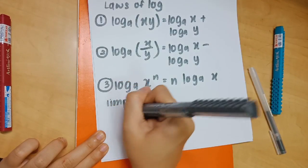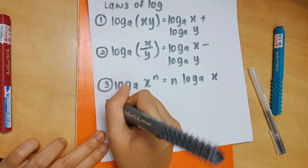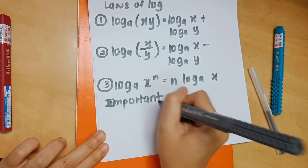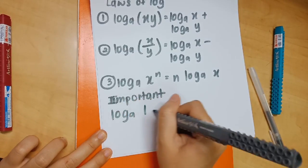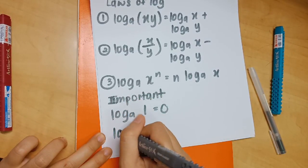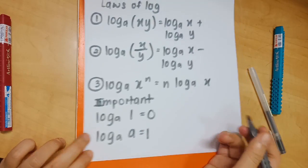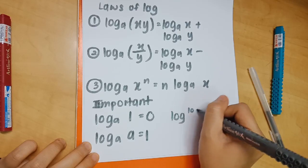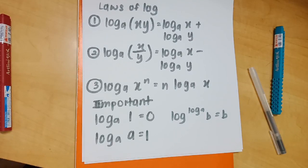Next, the important things to remember for logarithm. First, log_a(1) is always equal to 0. Second, log_a(a) equals 1. Third, a^(log_a b) equals b. If you're confused about these now, it's okay — we'll be applying them later and I'll explain along the way.